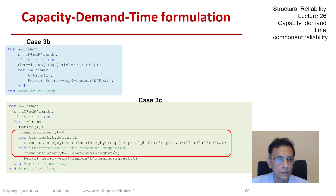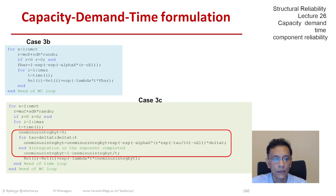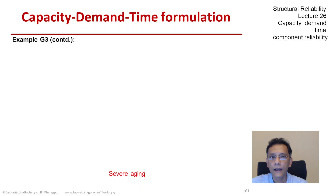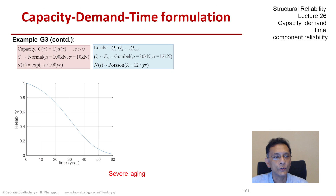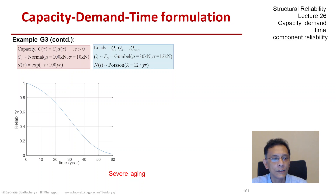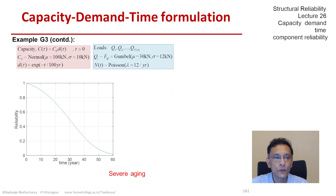That red box has the extra lines required to take aging into effect. If you do this enough number of times, we get the reliability function and the hazard function. This is quite severe aging, and it should not be a surprise that for this particular structure the reliability almost falls to 0. Obviously it's not a real situation — no one would probably build such a structure — but if it were so, the reliability becomes very soon very unacceptable.